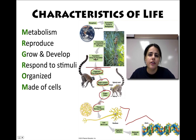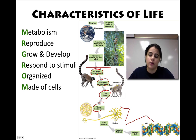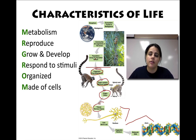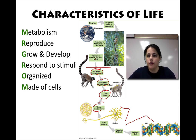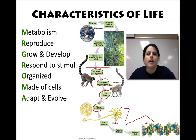All living things are made of at least one or more cells. Humans are multicellular organisms made of trillions of cells, but a lot of the cells that make up our body are actually bacteria, which are unicellular prokaryotic organisms. So we're going to review cells too.